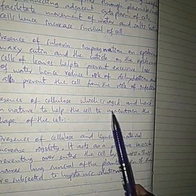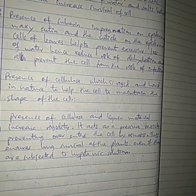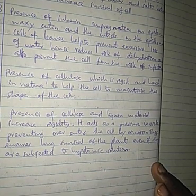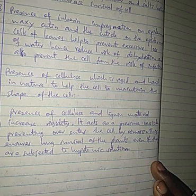Cellulose provides resistance to mechanical stress. The presence of cellulose and lignin increases rigidity. The cell wall also acts as a pressure vessel preventing over-entry of water into the cell, ensuring long survival of the plant even when subjected to a hypotonic solution. That covers the structure, function, and adaptation of the cell wall.